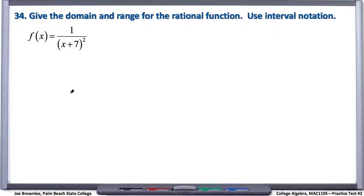Number 34: give the domain and range for the rational function using interval notation. We have f of x equals 1 over quantity x plus 7 squared.